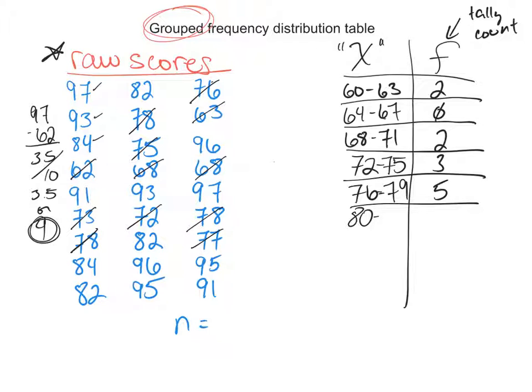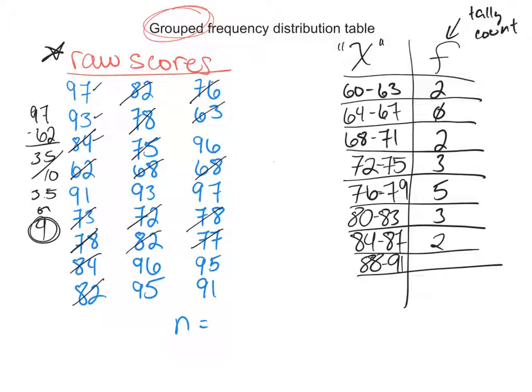And then we'll go 80 to 83. My interval is four. So I could have 80, 81, 82, or 83. So I have one, two, three. 84 to 87, I have one, two. And then 88 to 91, I have one, two.